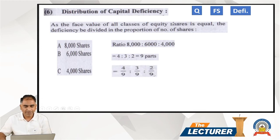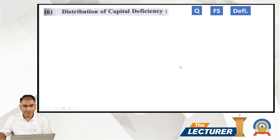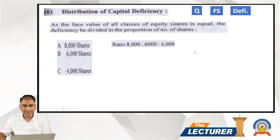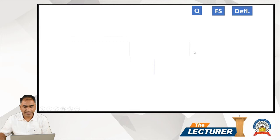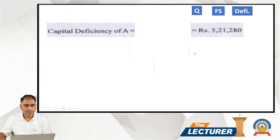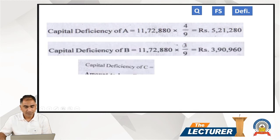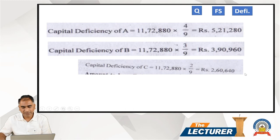The ratio is 4/9 : 3/9 : 2/9. The total deficiency is ₹11,72,880. Category A's share is ₹11,72,880 × 4/9; Category B's share is ₹11,72,880 × 3/9; Category C's share is ₹11,72,880 × 2/9.